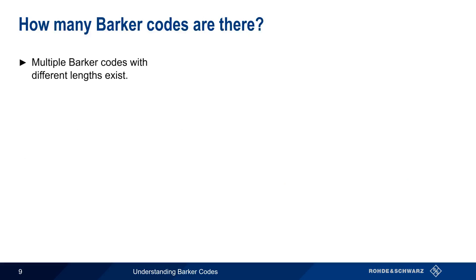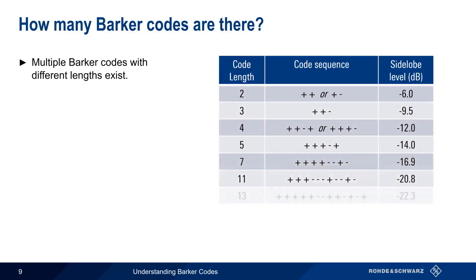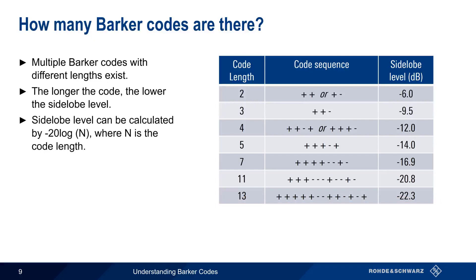There are actually multiple Barker codes. There are Barker codes with lengths 2, 3, 4, 5, 7, 11, and 13. The longer the code, the lower the side lobe level. Side lobe level can be calculated using minus 20 log n, where n is the length of the code. And, interestingly, despite extensive research over the last 65 years, no additional Barker code sequences have been discovered.